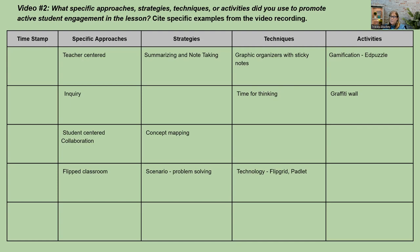My final example was flipped classroom. Students might be given a scenario to do problem solving — that might be a strategy. And techniques could be Flipgrid and Padlet used inside of it. Some people would say that's an activity. Either way, I don't care. The assessor is not going to be sitting there saying that's a technique and she called it an activity. They're looking at you matching your approaches, strategies, techniques, or activities to active engagement. Where are students actively engaged in this lesson, and how?